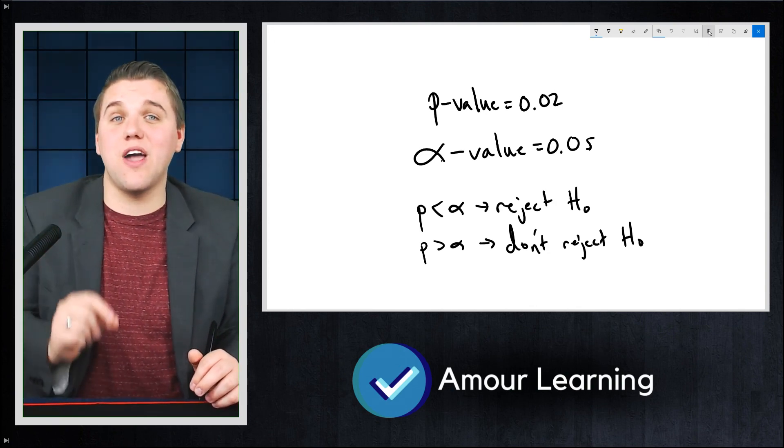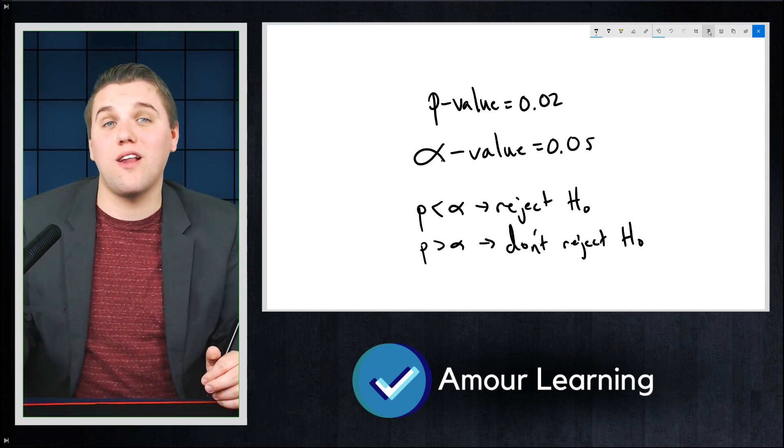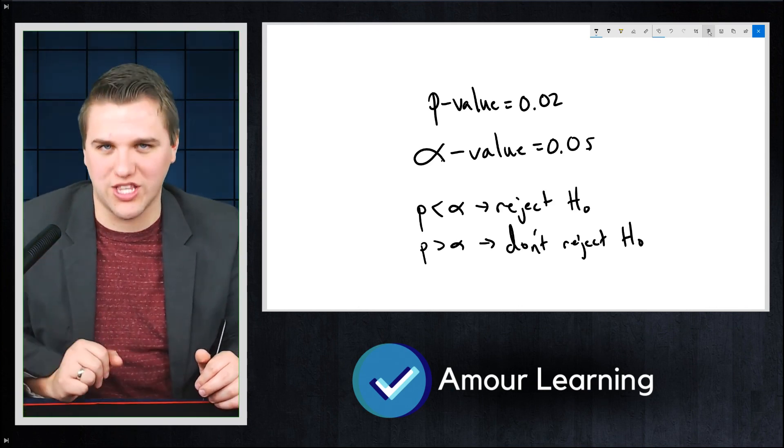So again, if the p-value is less than the alpha value, you reject the null hypothesis. And if the p-value is greater than the alpha value, then you don't reject the null hypothesis.